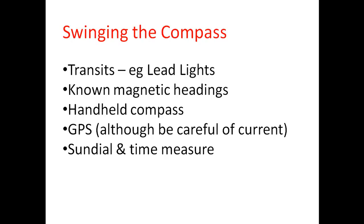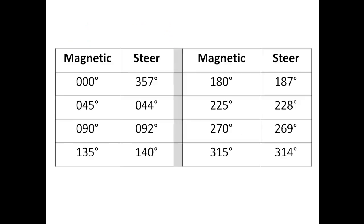Once you've done all this changing of headings and recording the difference between the magnetic heading and what appears on the compass, you can create what's called a deviation card. Specialist people do this on commercial vessels and aircraft — they swing the compass and produce either a deviation card or a graph showing the distance east or west from a particular heading. For example, on this deviation card, if you want to steer a magnetic heading of 000 the compass heading you steer is 357, and if you want to steer magnetic 225 you would steer 228 on your compass.